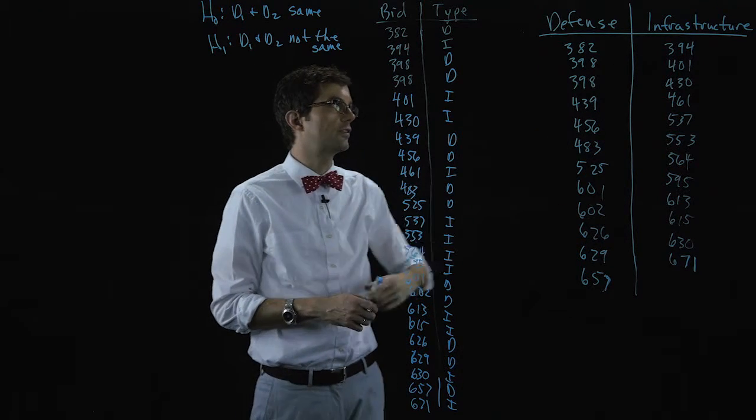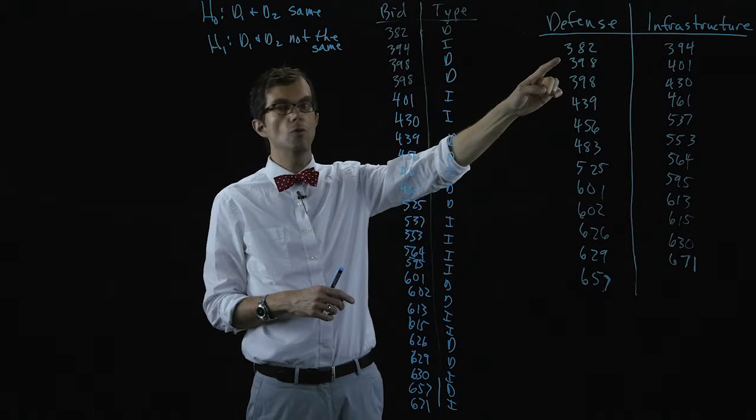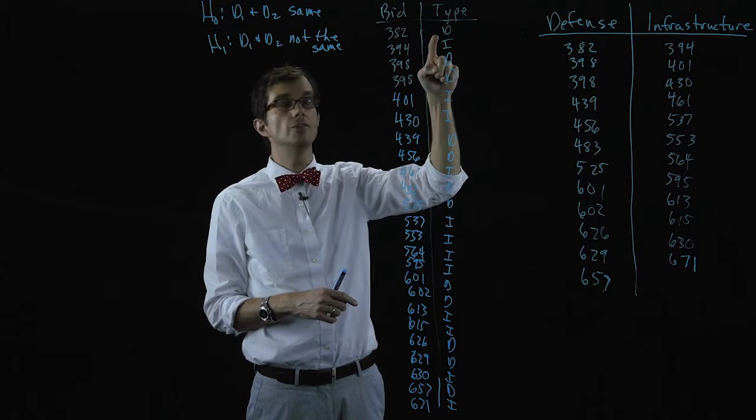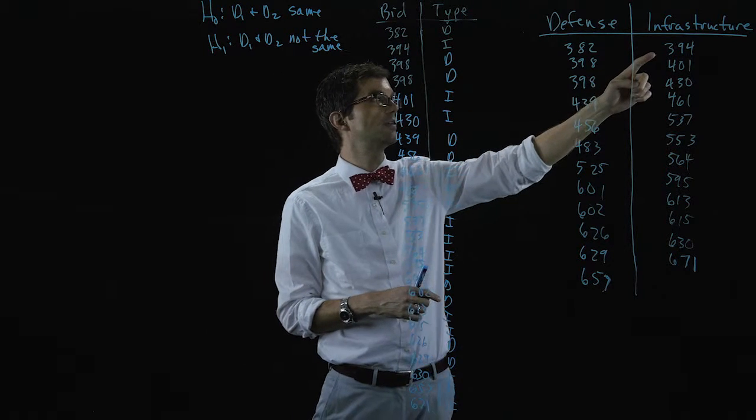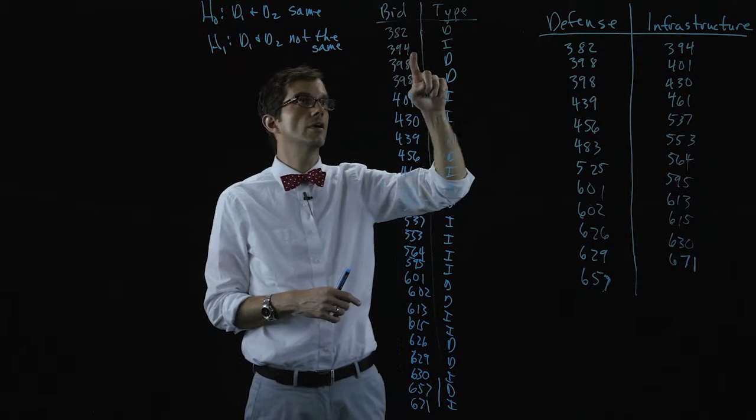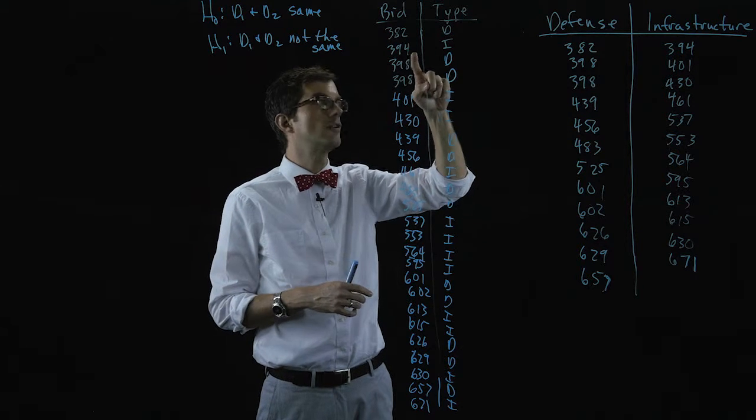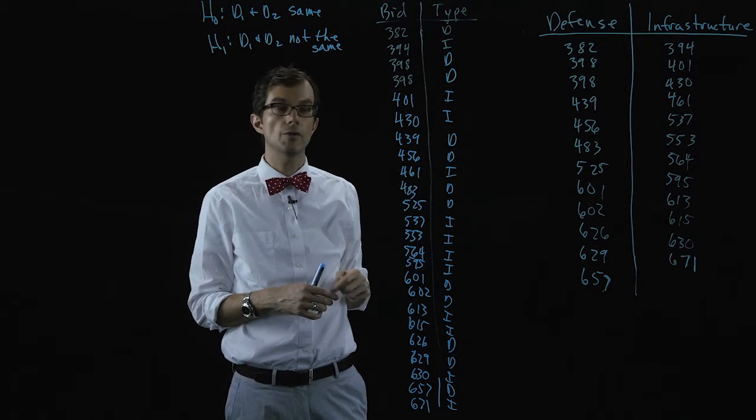So we've mixed those all together so the smallest observation was a bid for a defense project, it was 382. Then the second smallest bid was a 394, probably million dollar bid, for an infrastructure project and so on.